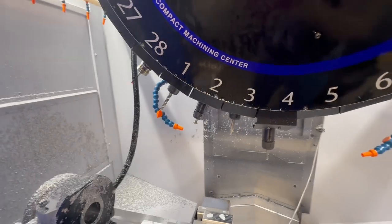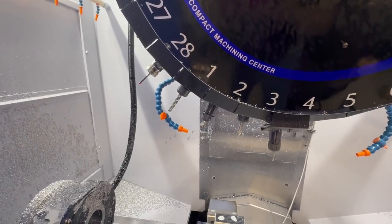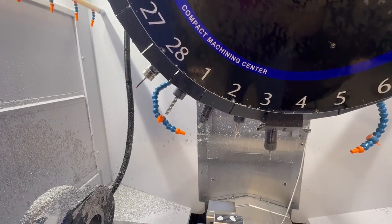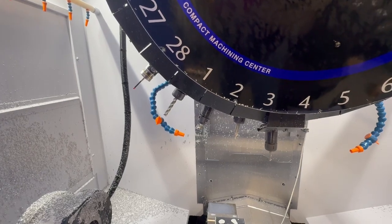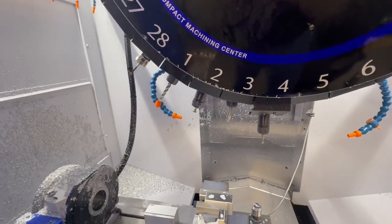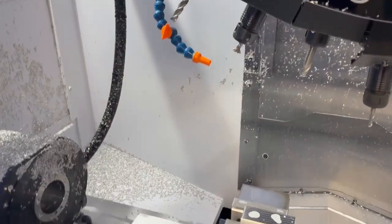We bought a whole bunch of ER-32 collets, collet chucks, and we bought some SKs and some hydraulic holders, but we didn't get anything in the one inch range. So anyway, I digress. So let's go back over to here.